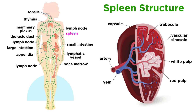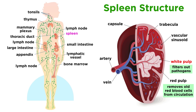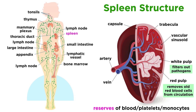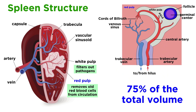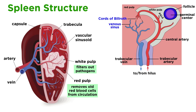The spleen is the largest lymphatic organ in the body. With a dark reddish-purple color, it sits right behind the stomach and has two main functions. The first is to remove old red blood cells from circulation, which occurs in a region of the spleen called the red pulp. And second, to filter pathogens and immune complexes from the blood, which occurs in regions called the white pulp. Unlike lymph nodes, the spleen only filters blood, not lymph. The spleen also holds an important reserve of blood, platelets, and monocytes. The red pulp makes up about 75% of the spleen's volume, and is comprised of the cords of Billroth and venous sinuses.